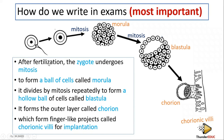Let me repeat it once and for all. When they ask you to explain this, don't explain the process of fertilization itself — they want you to explain what happens to the zygote until implantation. After fertilization, the zygote undergoes mitosis to form a ball of cells called a morula. The morula undergoes mitosis repeatedly to form a hollow ball of cells called a blastula. The blastula forms an outer layer called the chorion, which develops finger-like projections called chorionic villi, which are important for implantation.